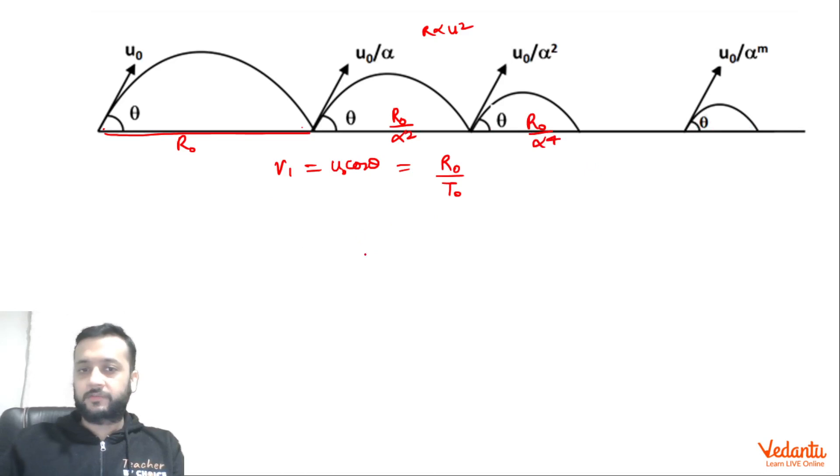So the total range of the entire journey will be R₀ into 1 plus 1/α² plus 1/α⁴ and so on. Divide by total time of flight. Time of flight is proportional to 2u sinθ/g. θ is not changing. So if the initial time of flight was T₀, then for here this will be T₀/α, this will be T₀/α². So 1 plus 1/α plus 1/α² and so on.